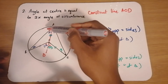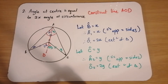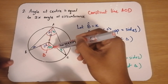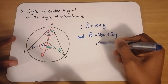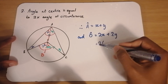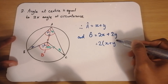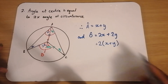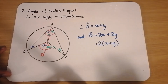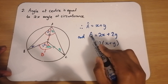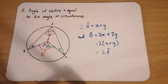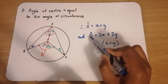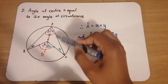Now let's see what we have. Angle A is equal to X plus Y, and angle O is equal to 2X plus 2Y. If I factor out a 2 as a common factor, then O is equal to 2 times (X plus Y). But we said that X plus Y is equal to angle A, so this must mean that angle O is equal to 2 times angle A. And hence the angle at the center is equal to 2 times the angle at the circumference.